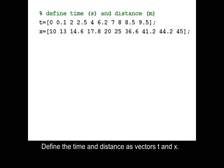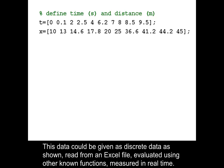Define the time and distance as vectors t and x. This data could be given as discrete data as shown, read from an Excel file, evaluated using other known functions, or measured in real time.